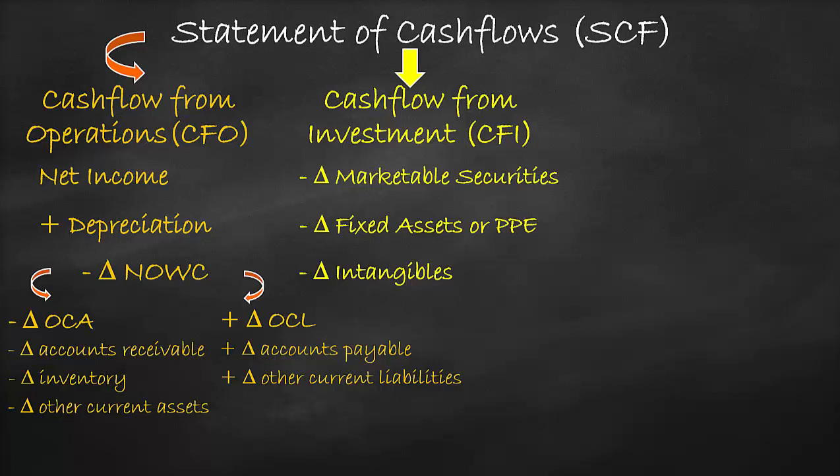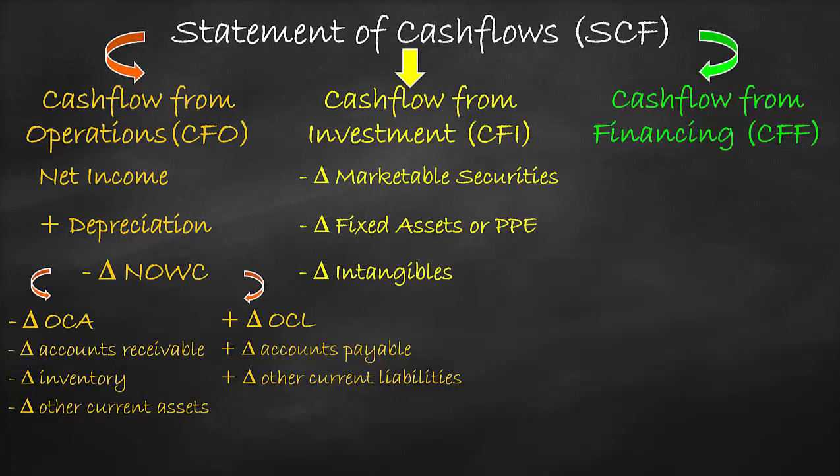Under the third and last category, we have cash flow from financing, which refers to non-operating liabilities and equity. We add the change in liabilities and equity, as the positive sign refers to a positive relationship between the change in cash and the change in liabilities and equity. This means higher liabilities and equity results in higher cash, and lower liabilities and equity results in lower cash. Once a company generates profit, the company can distribute dividends, which are cash given to the owners. From the company's perspective, this represents a negative cash outflow, so we use a negative sign for dividends.